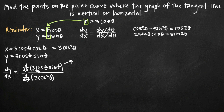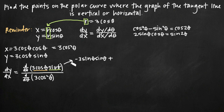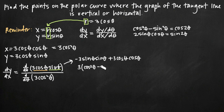To take the derivative of the numerator — 3 cosine theta times sine theta — we use the product rule. One function is 3 cosine theta and the other is sine theta. The derivative of 3 cosine theta is negative 3 sine theta, multiplied by sine theta, plus 3 cosine theta left alone multiplied by the derivative of sine theta, which is cosine theta. Simplified, factoring out 3, we get 3 times (cosine squared theta minus sine squared theta).